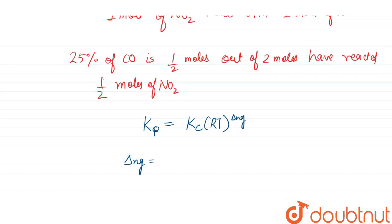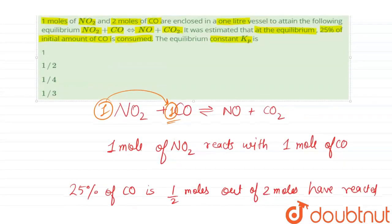Δn is total number of moles of product minus total number of moles of reactant. According to the reaction, total moles of product is 1 + 1 = 2, and total moles of reactant is also 1 + 1 = 2.